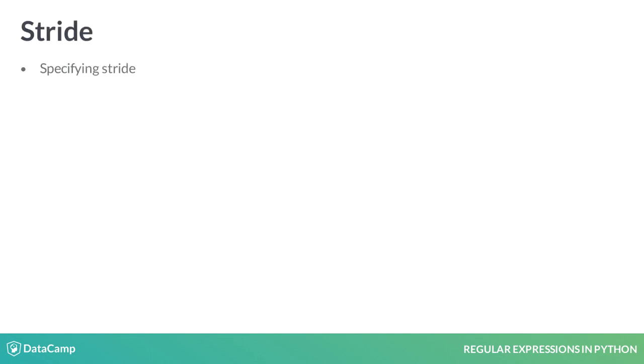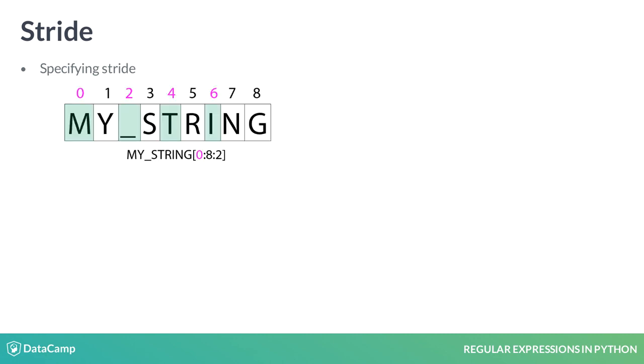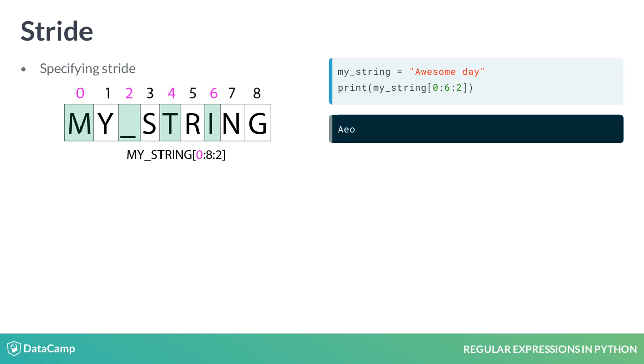String slicing also accepts a third index, which specifies how many characters to omit before retrieving a character. In the example, the specified indices returns the following output. They are the characters retrieved between positions zero and six, skipping two characters in between.